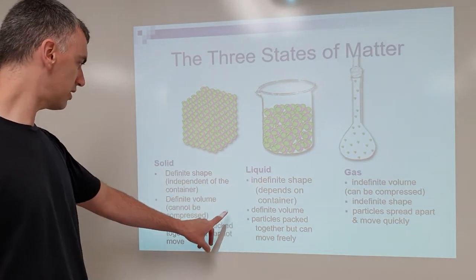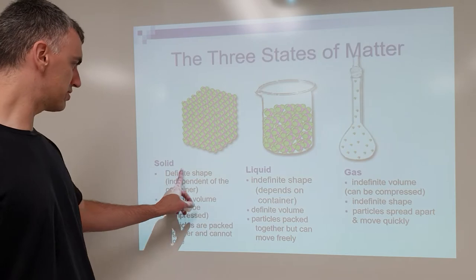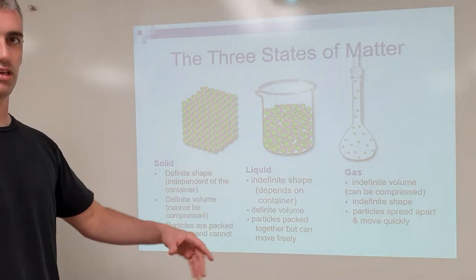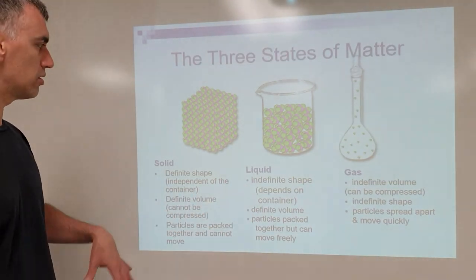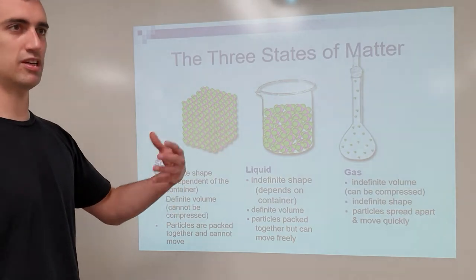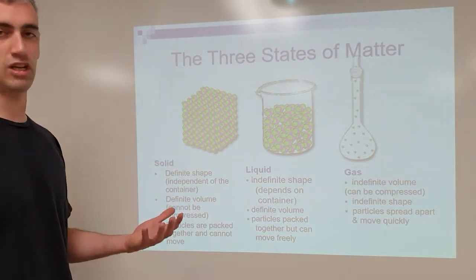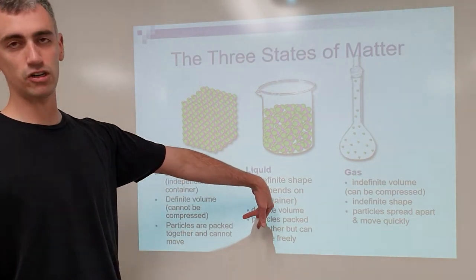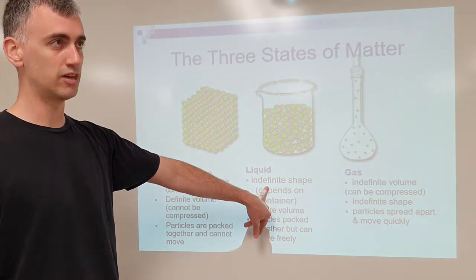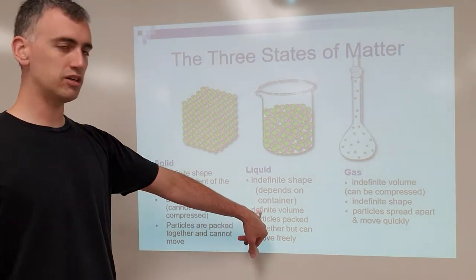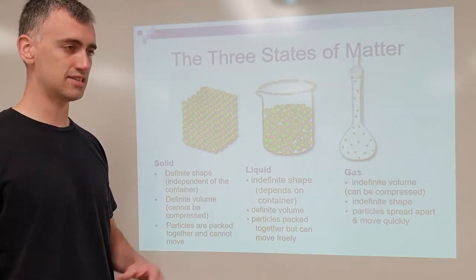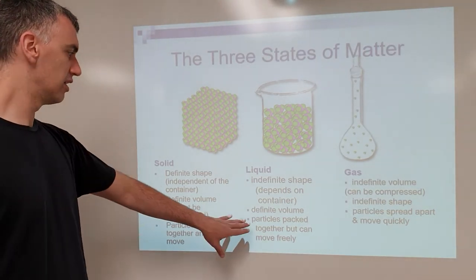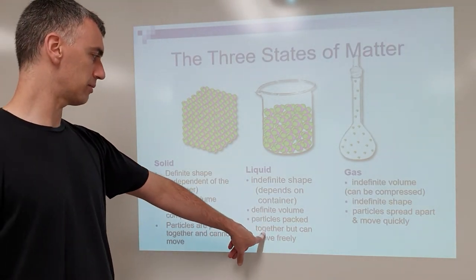Now for a liquid, notice how we change the word from definite to indefinite shape. If definite means staying the same and not changing, indefinite means able to change. So indefinite shape means the shape can change. We know that liquids flow — water flows, it takes the shape of whatever container it's in, unlike a solid. Definite volume means you cannot compress a liquid; it stays the same amount and takes up the same space even if you squeeze it.